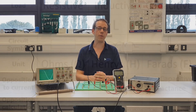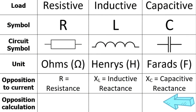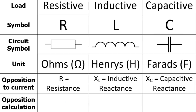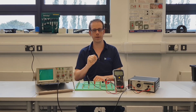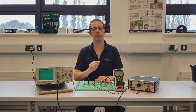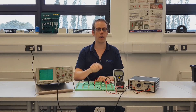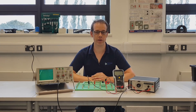Hopefully you've already got your worksheet downloaded. We're now working on this row here, looking at the opposition calculation. Our first type of load was resistance, and we know from previous videos the things that contribute to the resistance of a conductor. The formula, which should be familiar, is R equals rho times L over A. Those are the factors that contribute to resistance, but in this video we're looking at what contributes to the reactance of an inductor — inductive reactance.